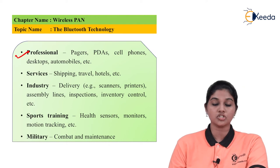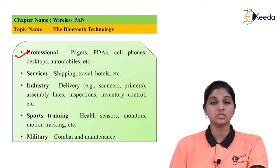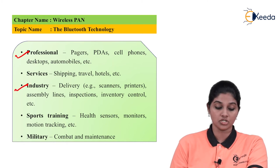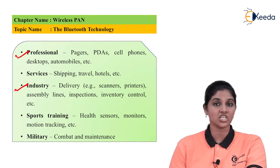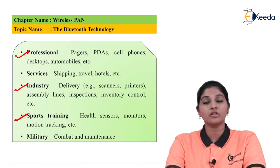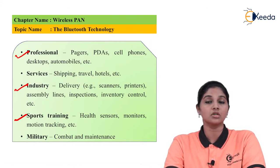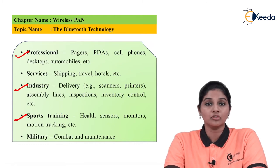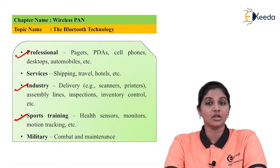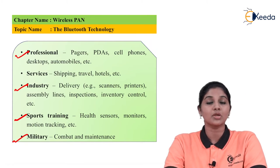Professional applications include pagers, PDAs, cell phones, desktops, and automobiles enabled with Bluetooth. Shipping, travel, and hotels can also use Bluetooth technology. In industry, Bluetooth is used for delivery scanning, assembly line, and inspection purposes. In sports training, health sensors and monitoring trackers use Bluetooth to capture vital parameters like blood pressure and heart rate and transmit that data to a computer. For military applications, Bluetooth is used for maintenance and monitoring soldier activities.